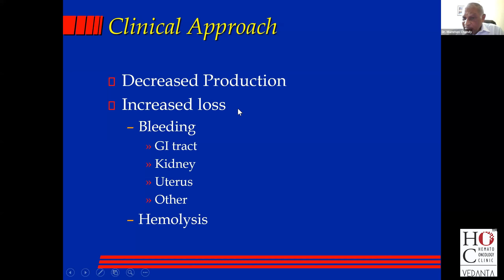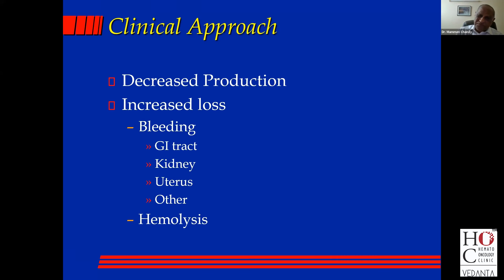How can you lose blood? There are only two ways you can lose red blood cells — one is by bleeding and two is by hemolysis. So actually, anemia is very simple. Only two ways you can lose blood: hemorrhage or hemolysis. The hemorrhage can be from any of a number of sites, mainly the GI tract; the kidney is very obvious; and the uterus you mustn't forget because of menorrhagia and other causes.